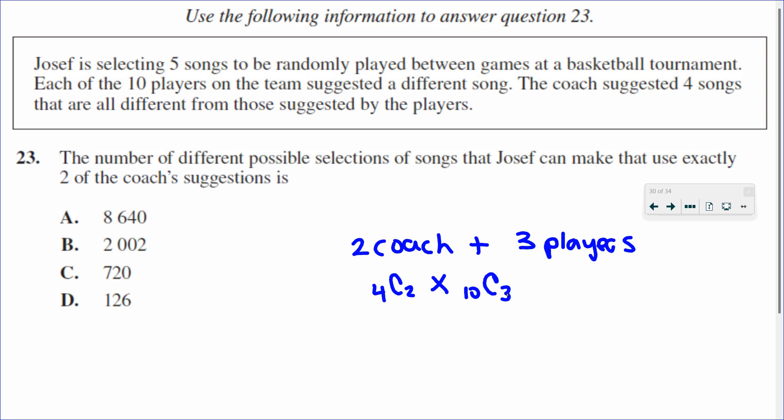Putting that into the calculator: 4C2 multiplied by 10C3 gives 720. So C would be the correct answer.